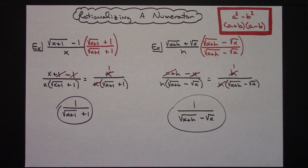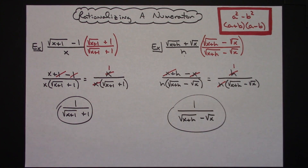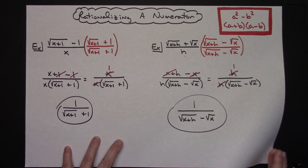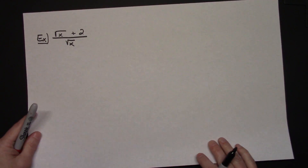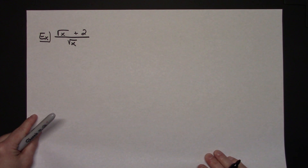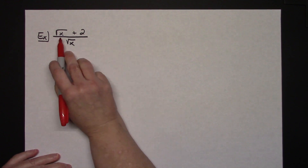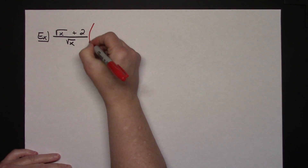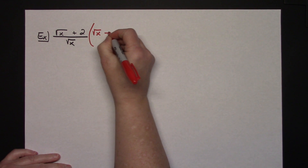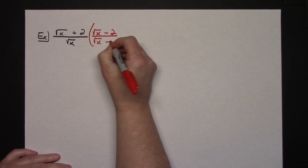Now it appears as though every time you rationalize a numerator you're going to get a 1 on top — but that is not necessarily always the case. Let's do one more example that gives you something that does not come out with a 1 in the numerator. Multiplying by the conjugate on this one, I'm going to be multiplying by the square root of x, minus 2, over the square root of x, minus 2.